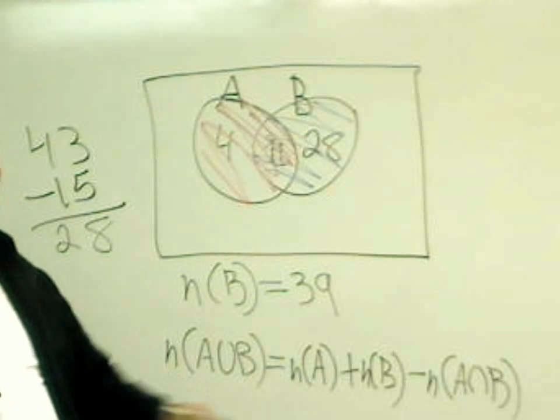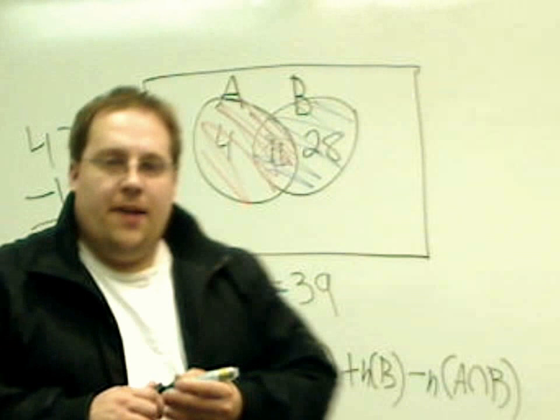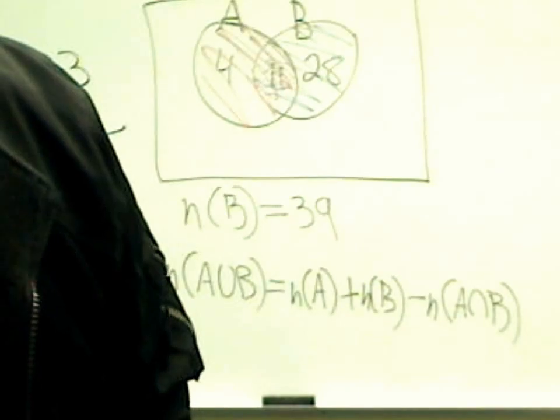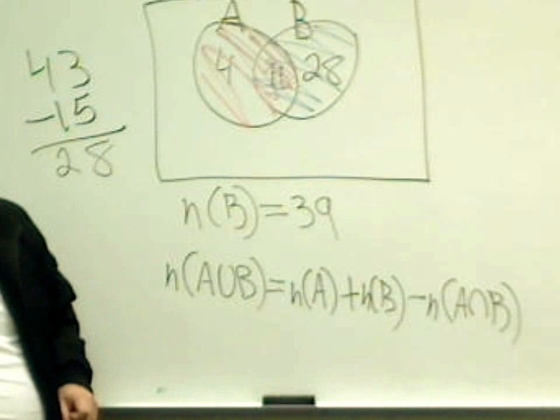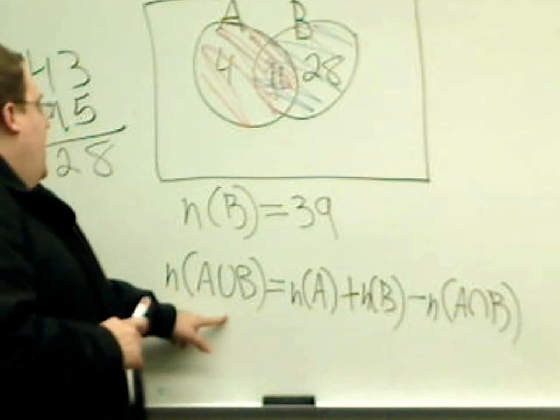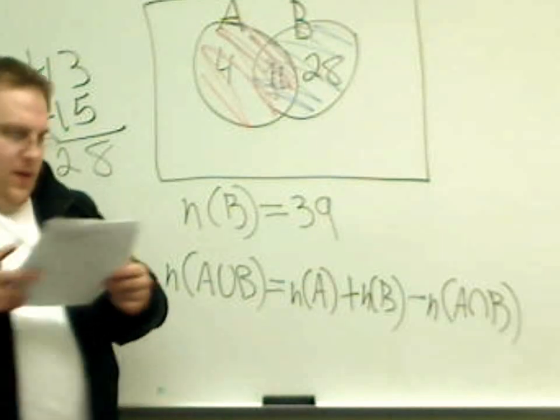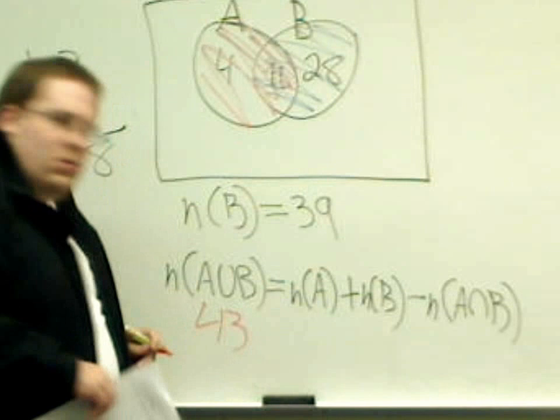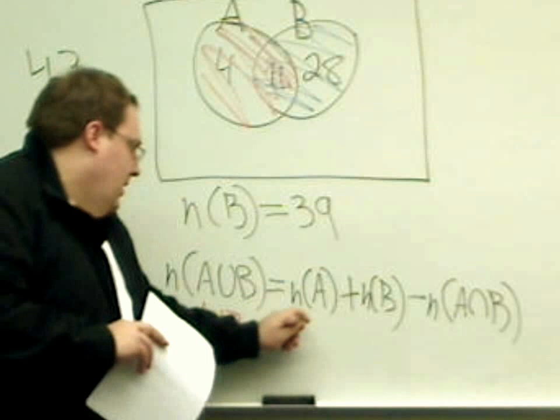This will also get us our answer. And let's just test that. I'm going to move the screen a little bit farther down. So let's see here. A union B, they told us what that was. They said that A union B had 43 elements. We knew how many things were in A as well. There were 15.